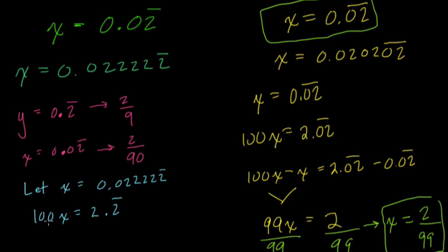So here we can't just subtract x from it. If you subtract 0.02 repeating, it won't cancel out with this 0.2 repeating. So what we need to then do is find 10x. And 10x equals what? Move once to the right, and 10x equals 0.2 repeating.